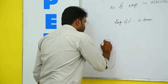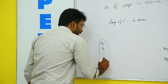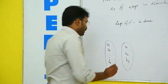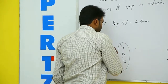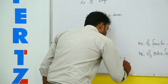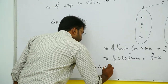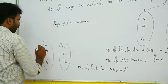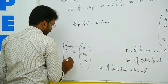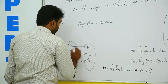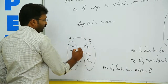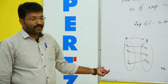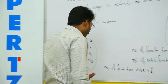Similarly, the number of onto functions from set {a1, a2, ..., am} to set {b1, b2, b3} — the total number of functions from A to B is 3^n, and we now find the number of onto functions from A to B.